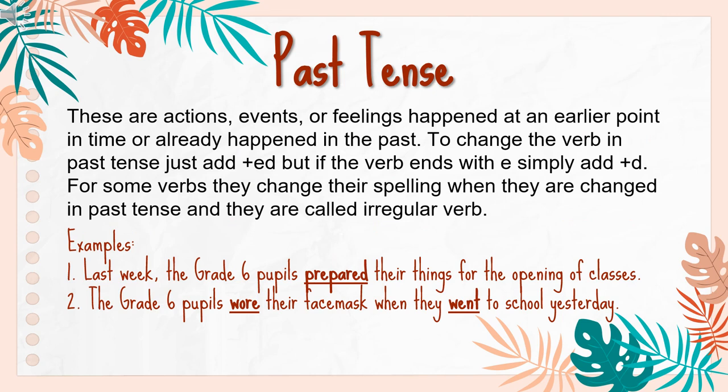Past tense. These are actions, events, or feelings that happened at an earlier point in time or already happened in the past. To change the verb into past tense, just add "-ed", but if the verb ends with "-e", simply add "-d". For some verbs, they change their spelling when changed to past tense and they are called irregular verbs. Examples: Last week, the grade 6 pupils prepared their things for the opening of classes. The grade 6 pupils wore their face mask when they went to school yesterday.